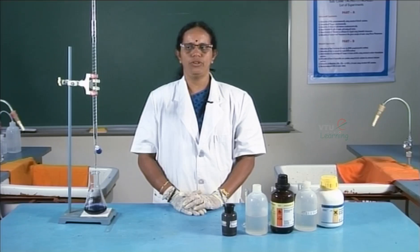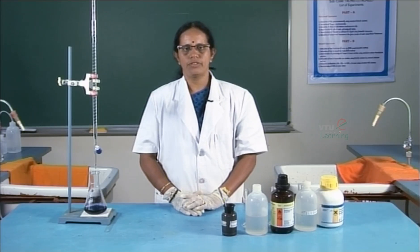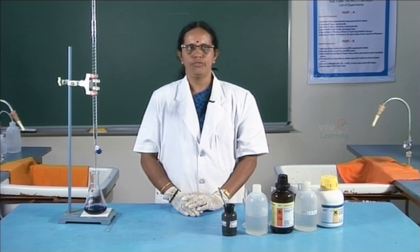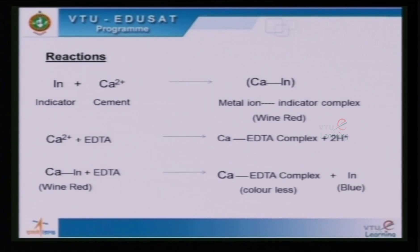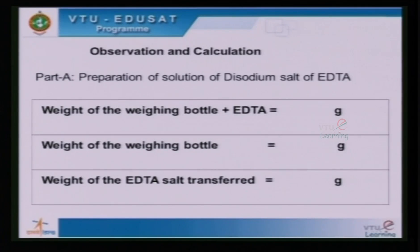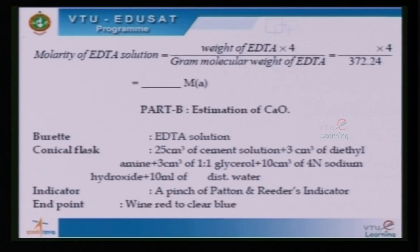The reactions involved in the experiment: the indicator forms a complex with calcium ions in cement, forming the metal ion-indicator complex which is wine red. The free calcium ions then form a complex with EDTA, releasing H⁺ ions. This brings down the pH of the solution, and the pH is maintained by diethylamine. The calcium-indicator complex is finally dissociated by EDTA near the end point and the indicator is released free, turning the solution blue.